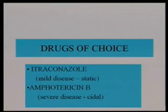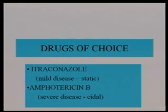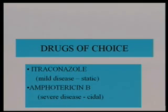The drugs for treatment: itraconazole is used for mild cases and is a static drug — it slows the organism down and lets body defenses take over. Amphotericin B, in contrast, actually kills the organisms — it's a cidal drug.